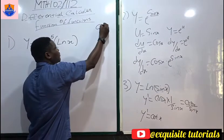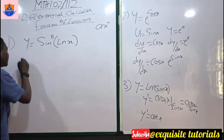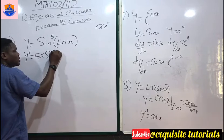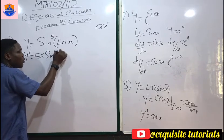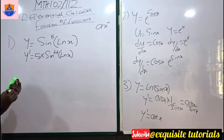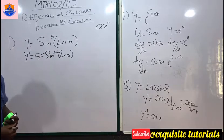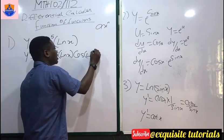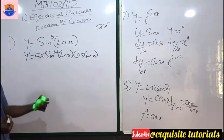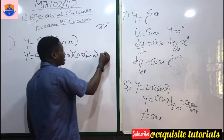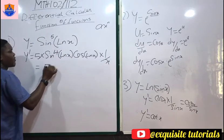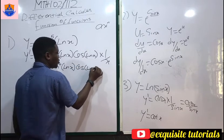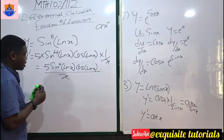That's not all — when you differentiate the sin function you get cos, so you multiply by cos(ln x). And you still need to differentiate what's inside sin, which is ln x, giving 1/x. So the final answer is 5 sin⁴(ln x) · cos(ln x) / x.